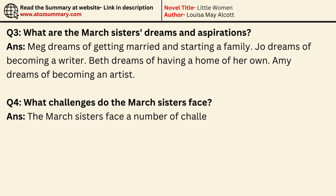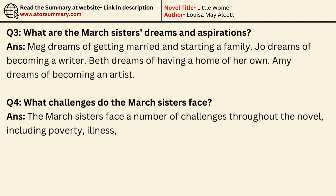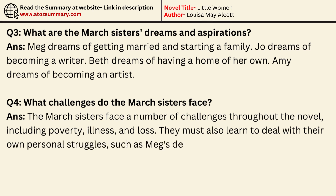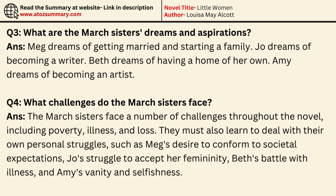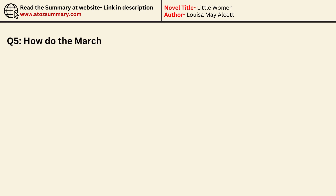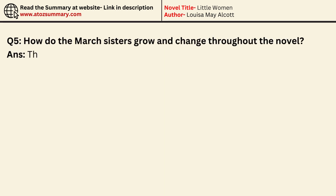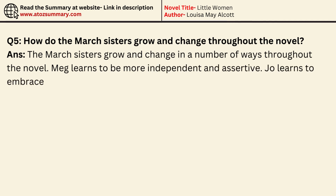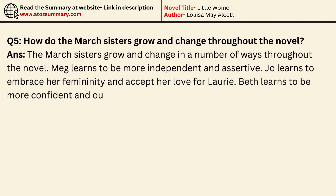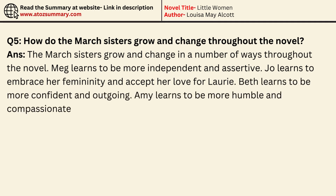The March sisters face a number of challenges throughout the novel, including poverty, illness, and loss. They must also deal with personal struggles such as Meg's desire to conform to societal expectations, Jo's struggle to accept her femininity, Beth's battle with illness, and Amy's vanity and selfishness. The sisters also grow and change: Meg learns to be more independent and assertive, Jo learns to embrace her femininity and accept her love for Lori, Beth learns to be more confident and outgoing, and Amy learns to be more humble and compassionate.